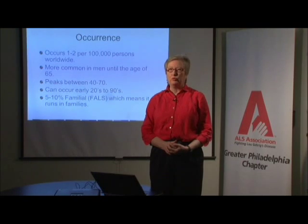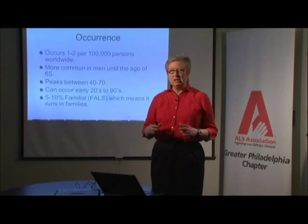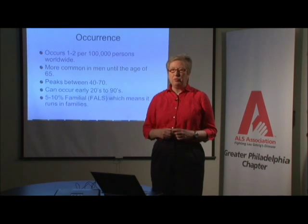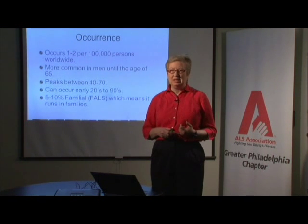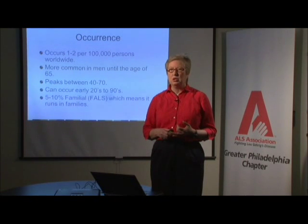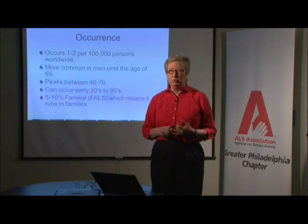ALS occurs all over the world, roughly one to two per 100,000 people. So if you live in a town of 100,000 people, we would expect to see one to two cases of ALS. There have been reported clusters — greater than one to two per 100,000 people. There is a known cluster among anyone who has served in the military, any branch, whether they've seen active combat or not. Those folks have two to four per 100,000, meaning anyone in the military is twice as likely to get ALS, and they don't know why. The Department of Defense is looking into that.